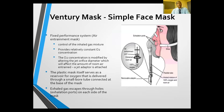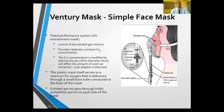The Venturi mask is the other non-rebreather system. It uses a simple face mask with exhalation pores similar to the Hudson mask, but the main difference is the connections. There is a flexible tube and a removable adapter that uses the Venturi flow system to maintain a fixed FiO2 to the patient. That's why it's called a fixed performance system and air entrainment mask. The inhaled gas mixture is precisely controlled so it delivers exactly the FiO2 you want, and you just change the adapter to set the FiO2 level.